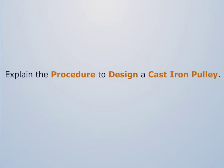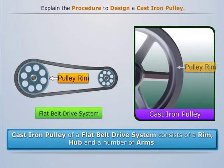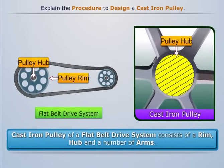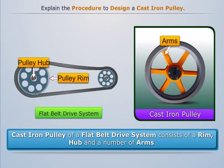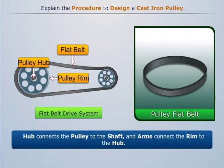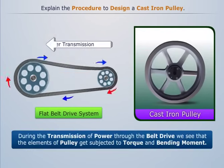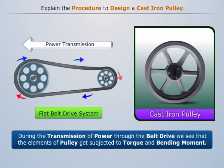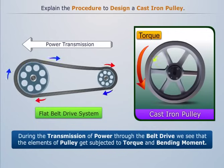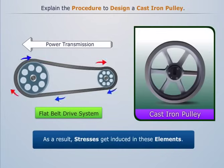A cast iron pulley of a flat belt drive system consists of a rim, hub, and a number of arms. The rim carries the belt, the hub connects the pulley to the shaft, and the arms connect the rim to the hub. During the transmission of power through the belt drive, the elements of the pulley get subjected to torque and bending moment, as a result stresses get induced in these elements.